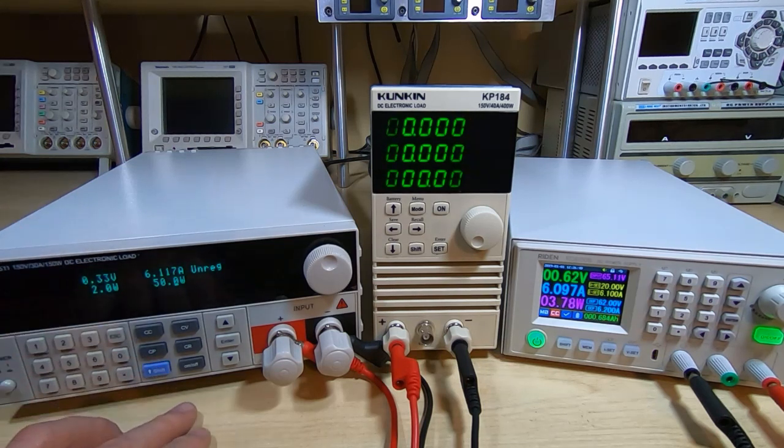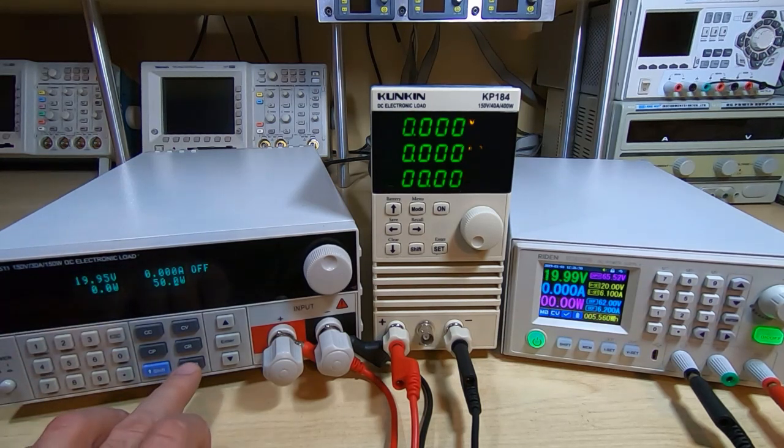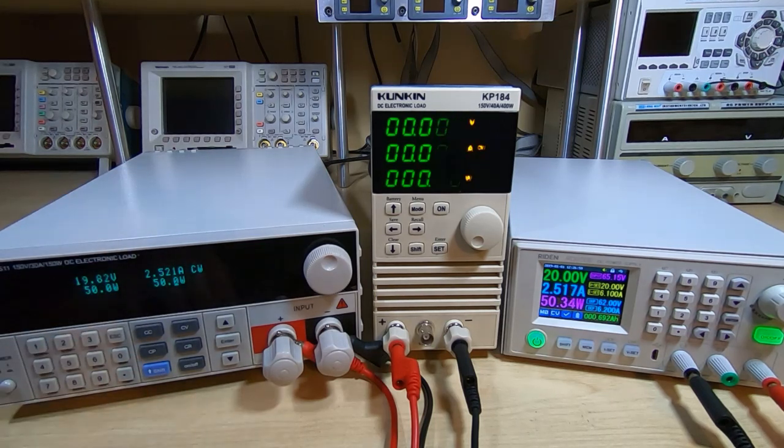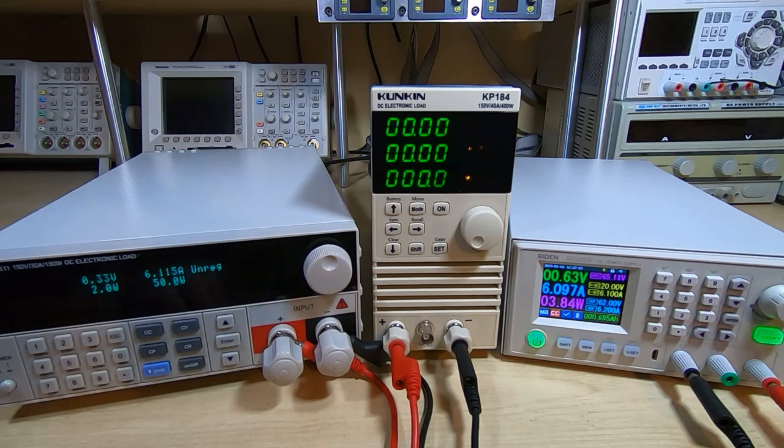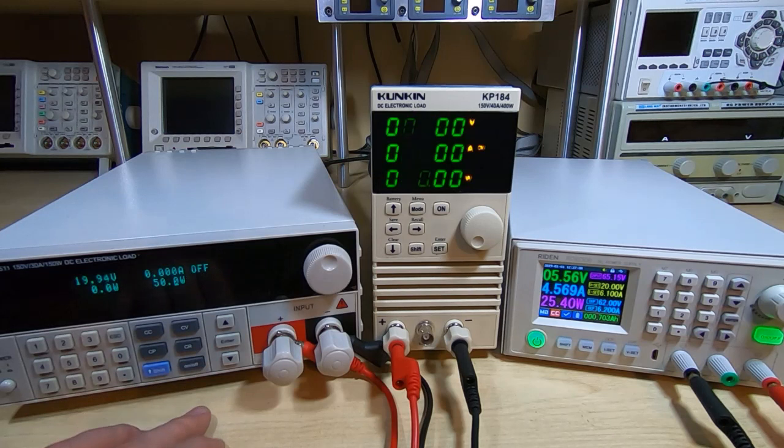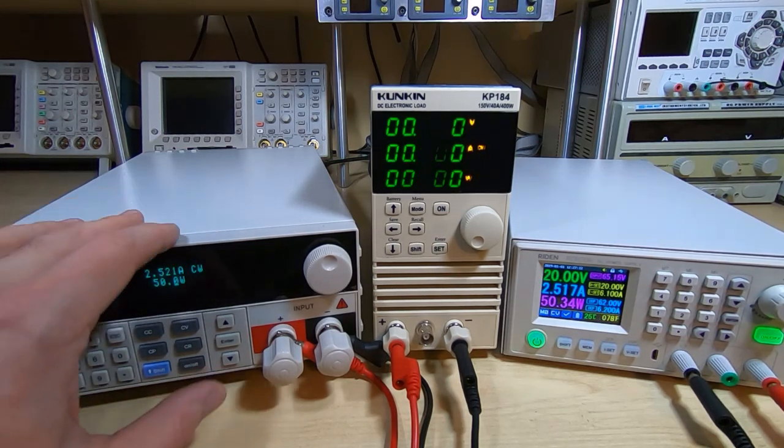You can see that by turning this load off and then back on, we get a different settling point than we do if we turn the supply on when the load's already switched on. It's now sitting at 2 watts, whereas if we turn this off and back on, it's now sitting at 50 watts. So that's one thing to bear in mind.